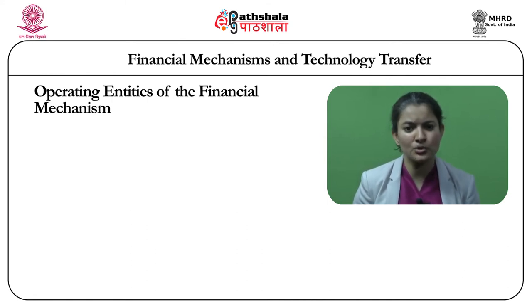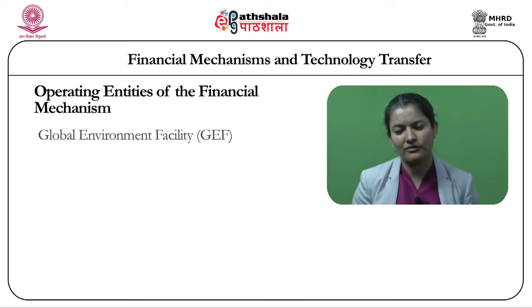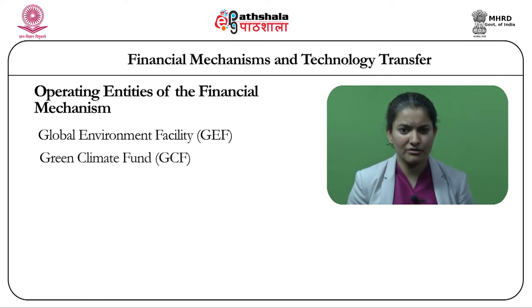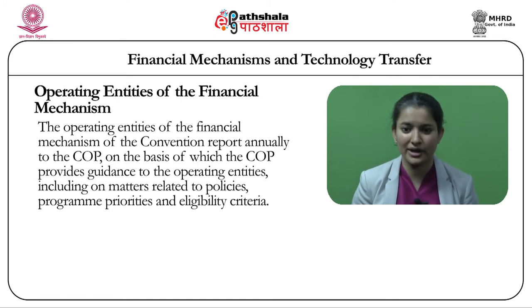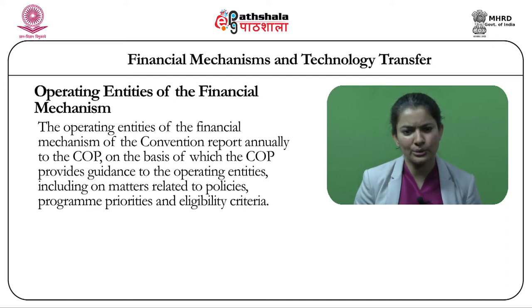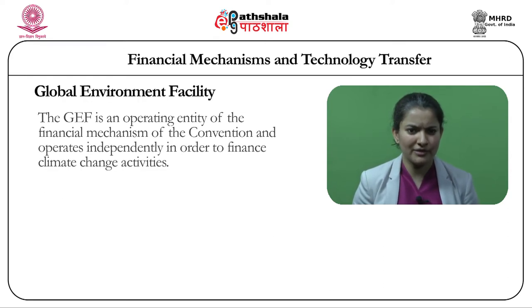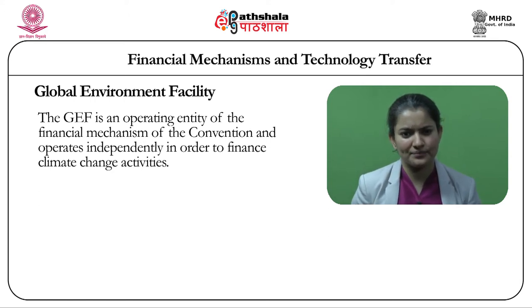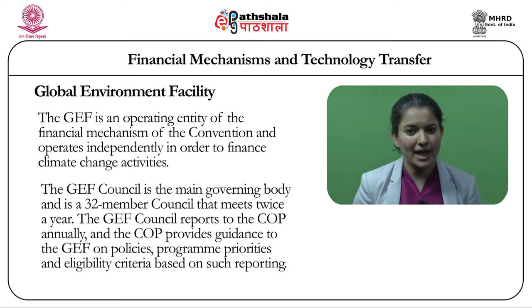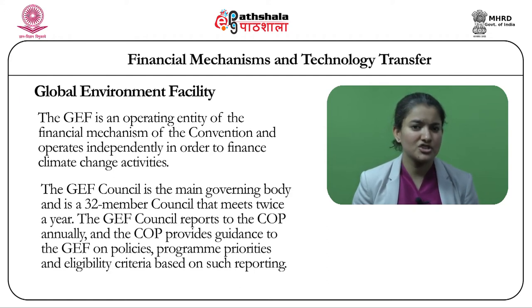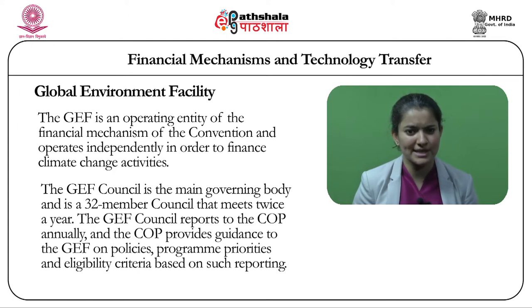Currently, there are two operating entities of the Financial Mechanism: the Global Environment Facility, the GEF, and the Green Climate Fund, the GCF. Both operating entities report annually to the COP, on the basis of which the COP provides guidance to the operating entities, including on matters related to policies, program priorities and eligibility criteria. The COP further reviews each financial mechanism every four years. The Global Environment Facility is an operating entity of the Financial Mechanism, which operates independently to finance climate change activities. The GEF Council is the main governing body — a 32-member council that meets twice a year and reports to the COP annually.